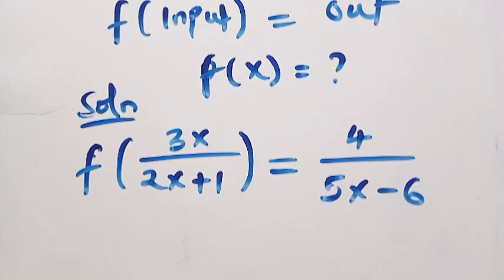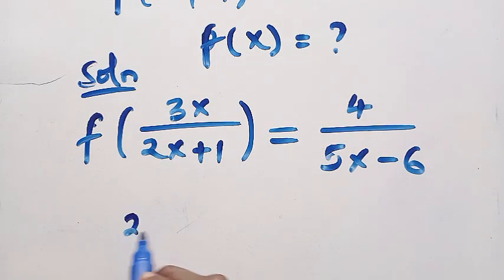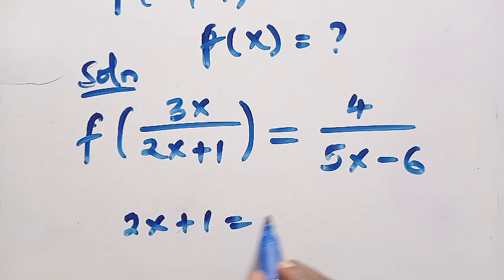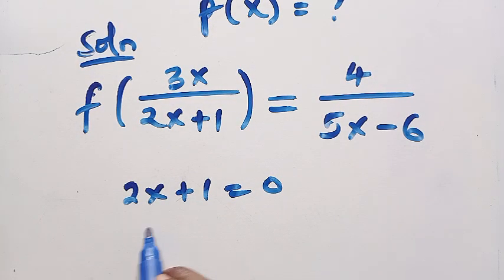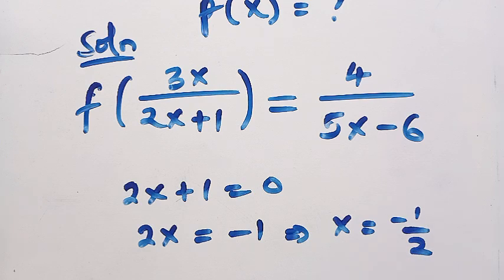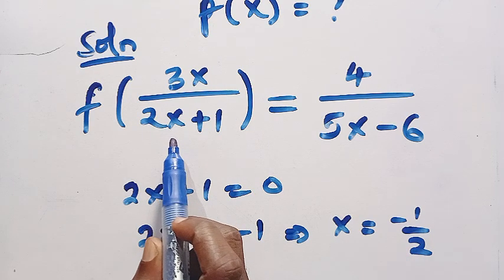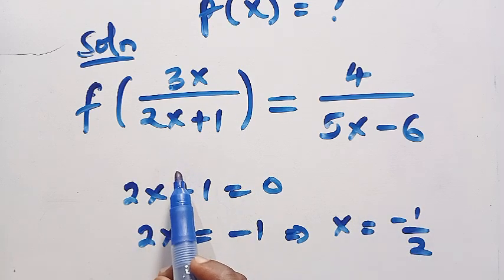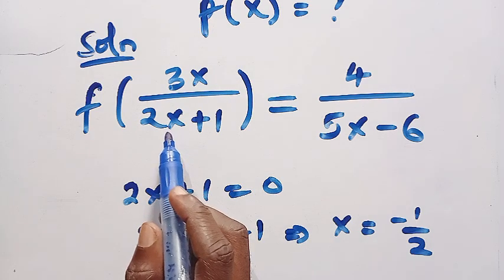Looking at the domain: suppose we let 2x plus 1 equal 0. Making x the subject, we get 2x equals minus 1, which implies x equals minus 1 divided by 2. So at x equals minus 1 over 2, this point is not part of the domain — x must not equal minus 1 over 2.